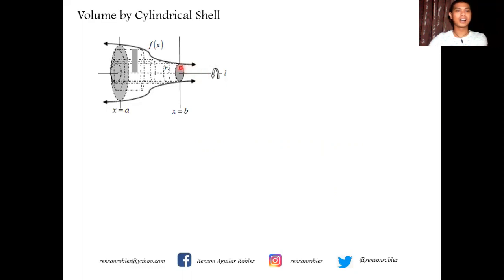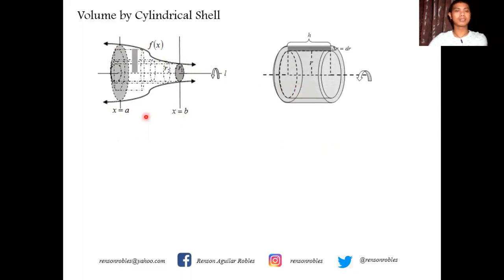Let's take the case when the region is bounded by a continuous function f(x) on the closed interval [a, b]. We can choose a representative cylinder of this form. The region is bounded by the curve y = f(x), and the line L is our axis of revolution, between two vertical lines x = a and x = b. The entire solid can be divided into infinitely many cylinders — the first, second, third, and so on — and we take a representative cylinder of this form.